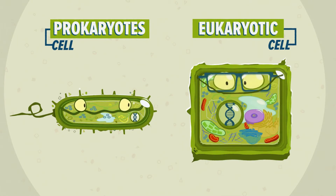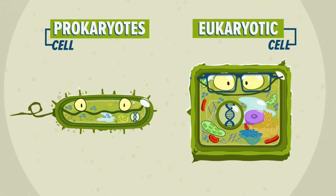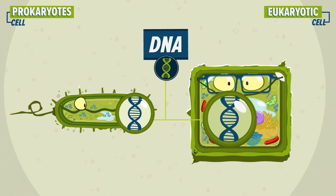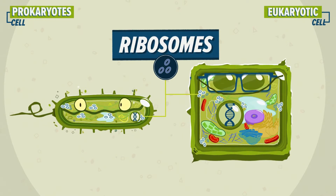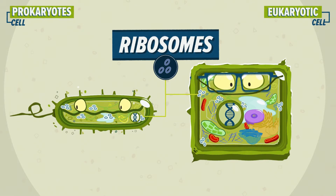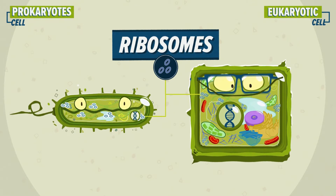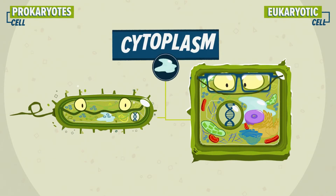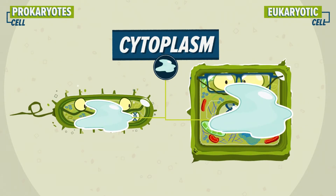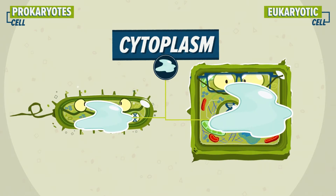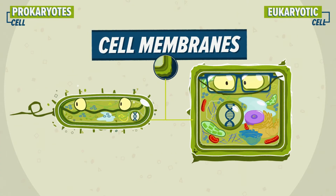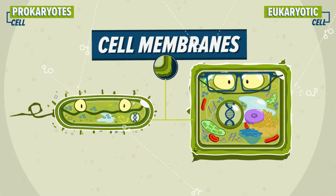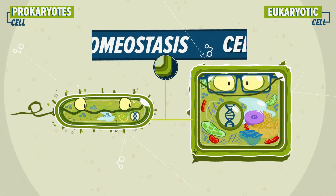Prokaryotic cells and eukaryotic cells have more common features. Both have DNA, the cell's genetic material. Both have ribosomes, molecular complexes of proteins and RNA, where biological protein synthesis takes place. They have cytoplasm, the fluid on the inside of the cells that surrounds the different free-floating cellular components. All cells have an outer plasma membrane, which is vital for controlling what goes in and out of the cell, which helps them maintain homeostasis.